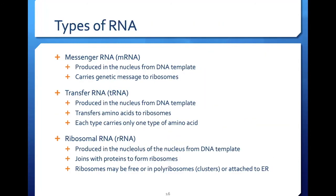Messenger RNA, or mRNA, is produced in the nucleus of a eukaryotic cell, as well as in the nucleoid region of prokaryotic cells. DNA serves as a template for the formation of mRNA during the process of transcription. Which DNA genes are transcribed into mRNA is highly regulated in each type of cell and accounts for the specific functions of all cell types. Once formed, mRNA carries genetic information from DNA in the nucleus to the ribosomes in the cytoplasm, where protein synthesis occurs during a process called translation.